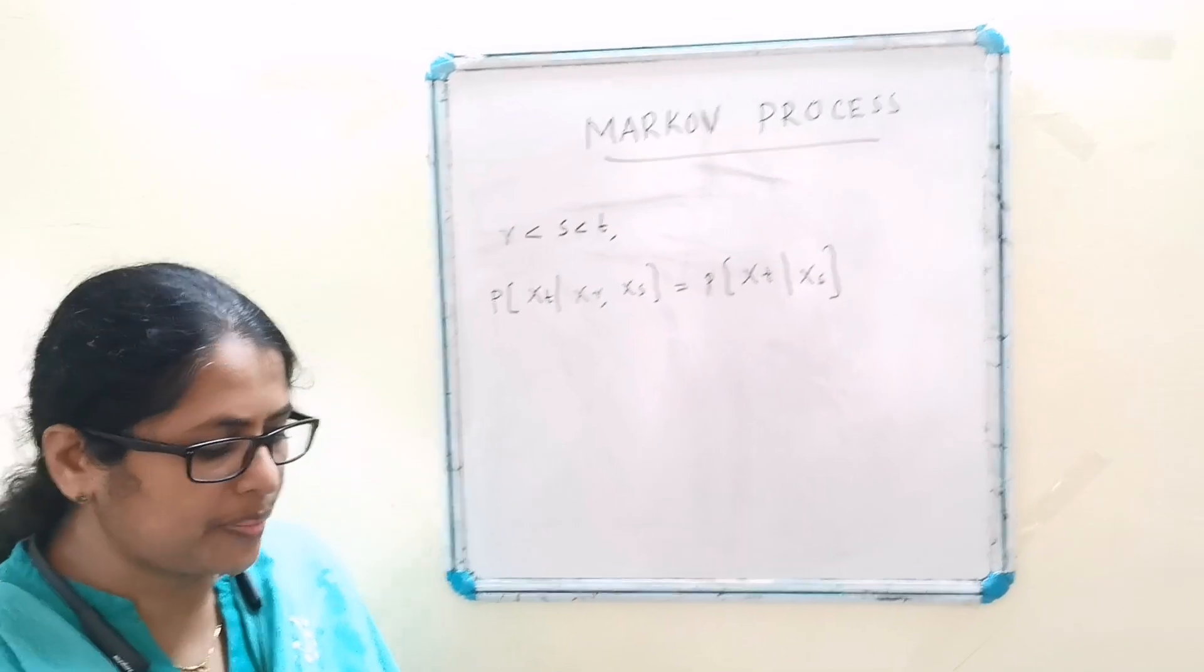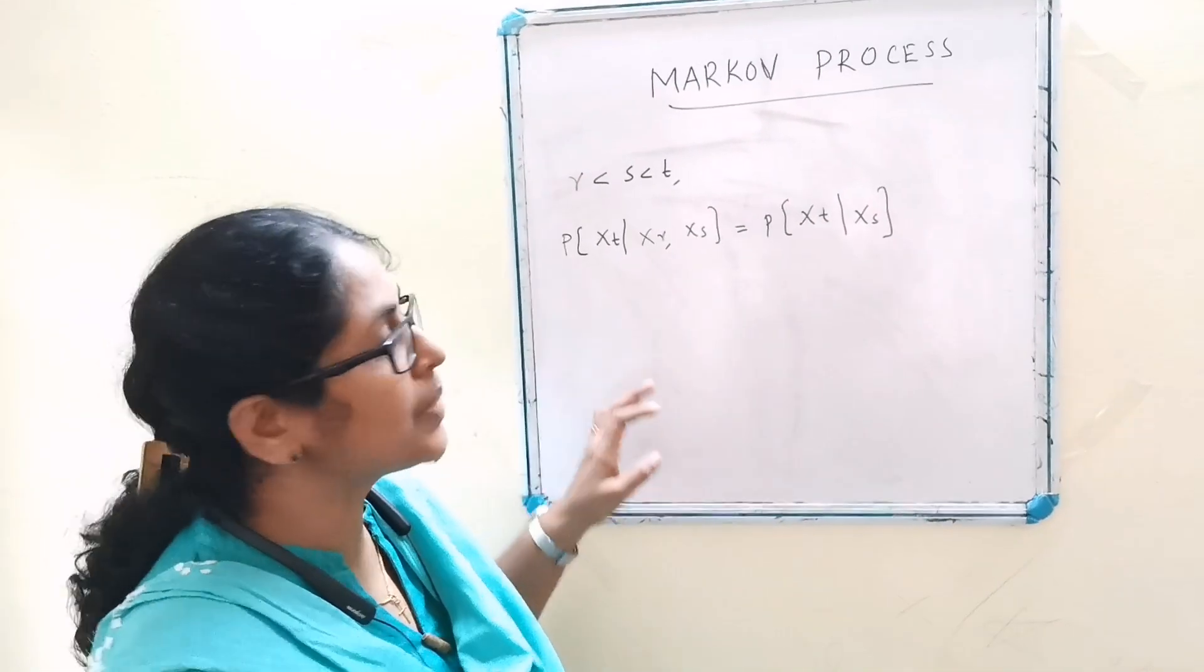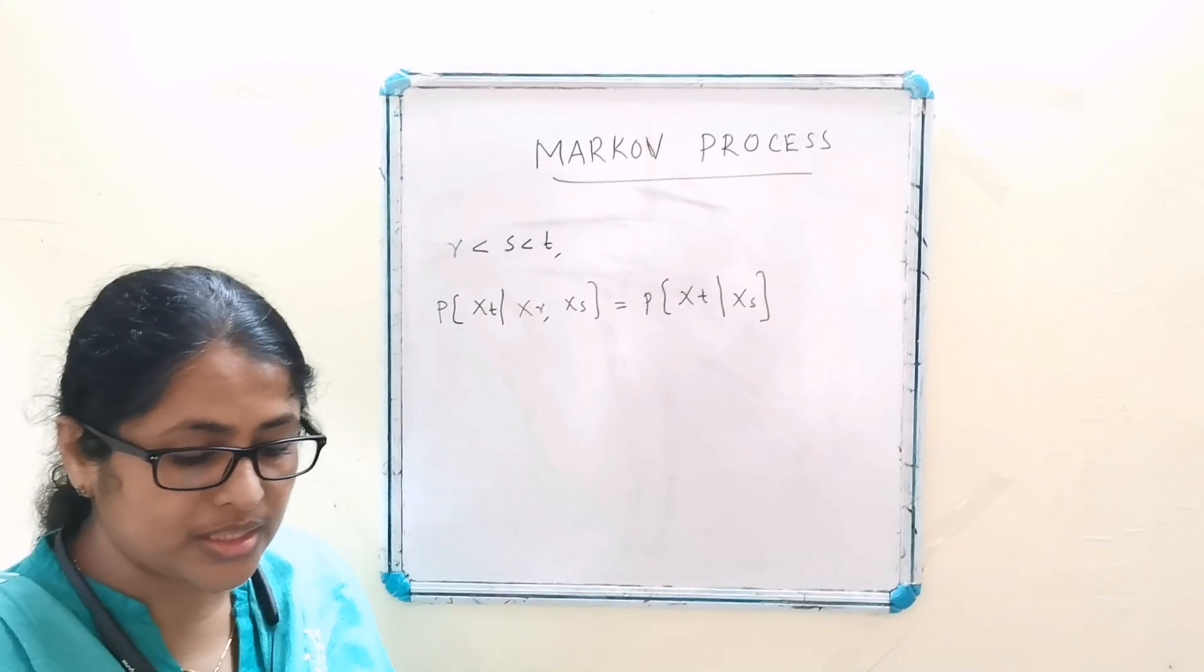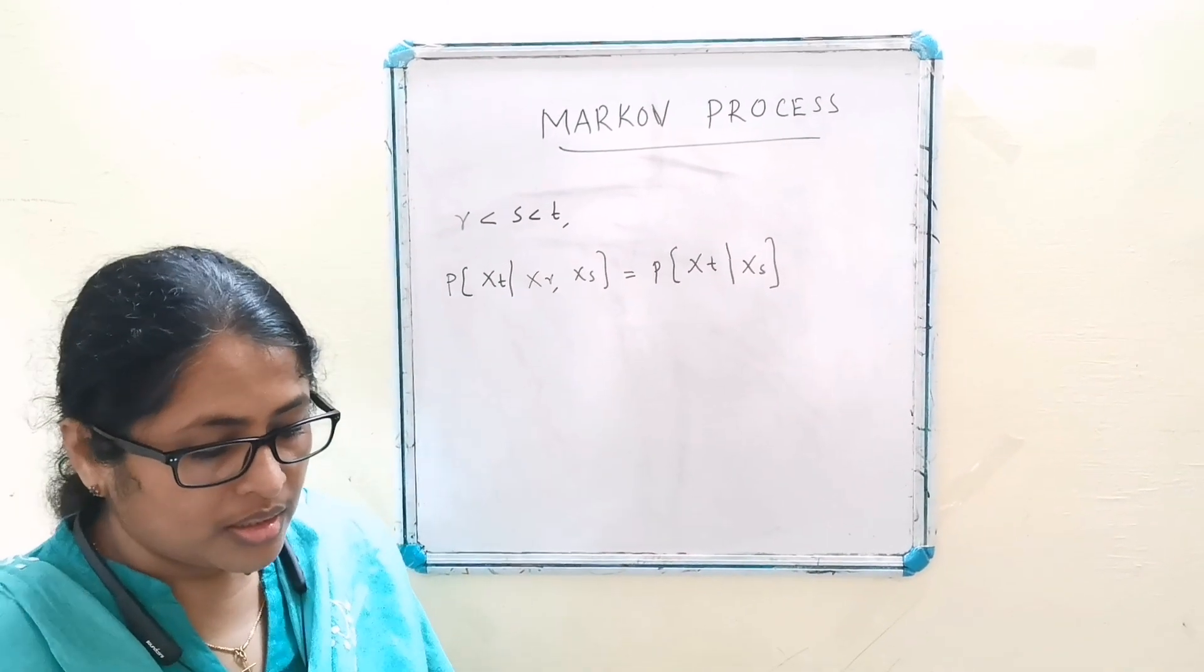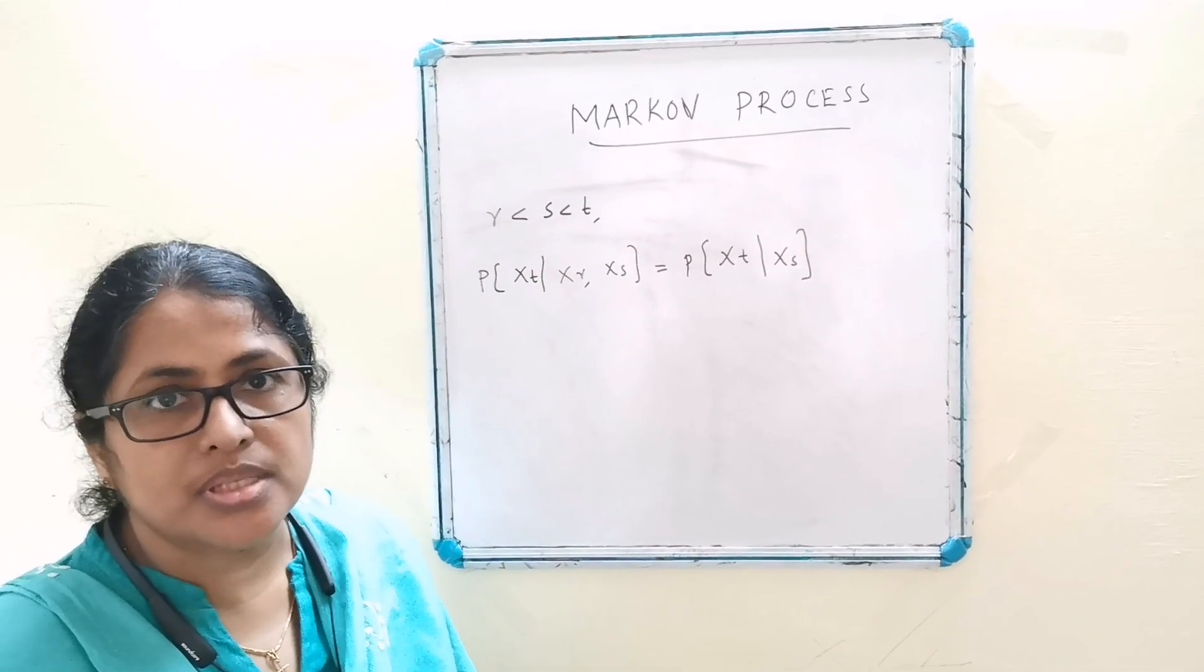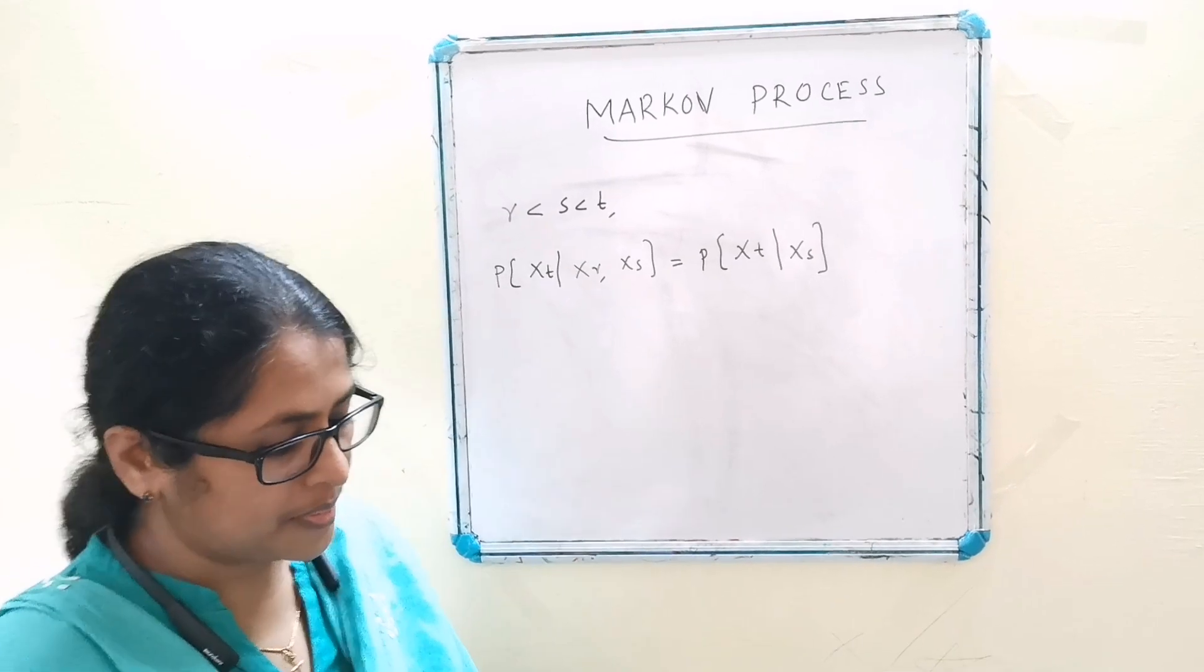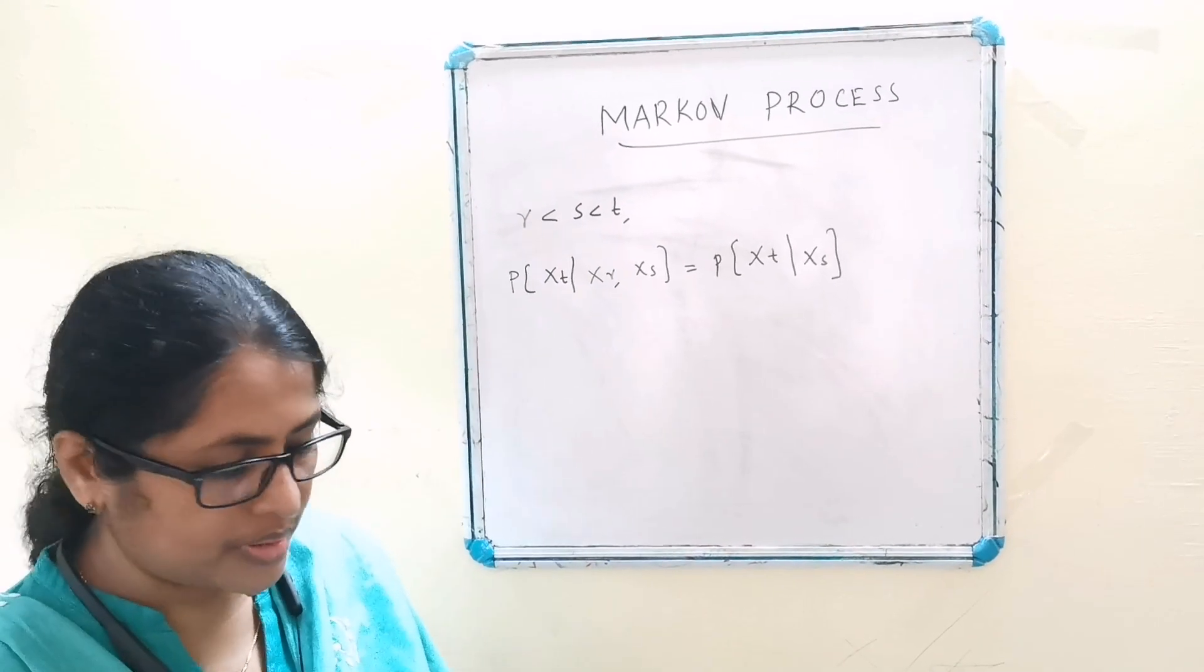This simply means that if the future depends only on the present irrespective of the past, then the system is said to possess Markovian property.